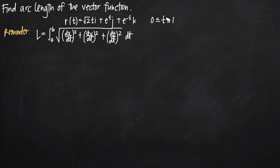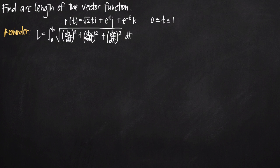The formula we're going to use to find arc length of the vector function is the formula written here for L. It's adapted from the arc length formula we use for parametric equations, because when we're dealing with a vector function we can essentially break it down into parametric equations.